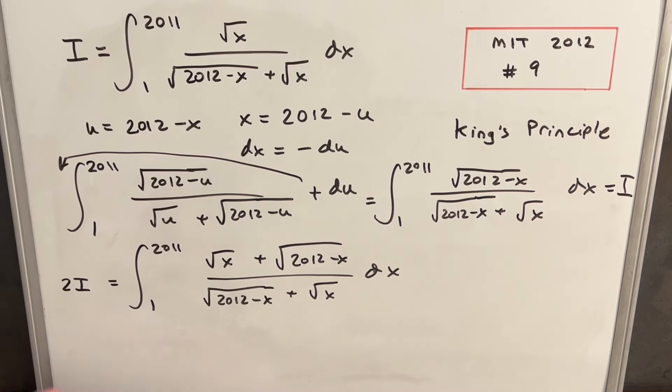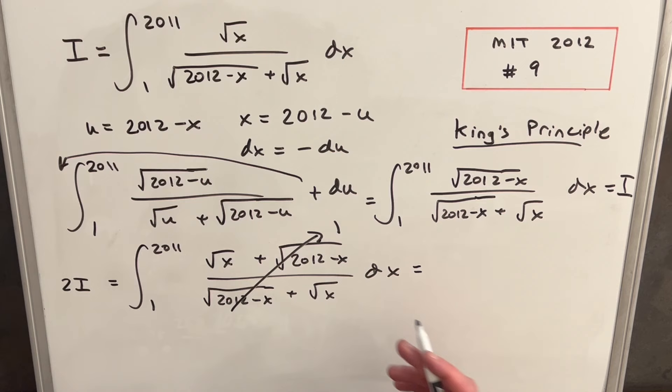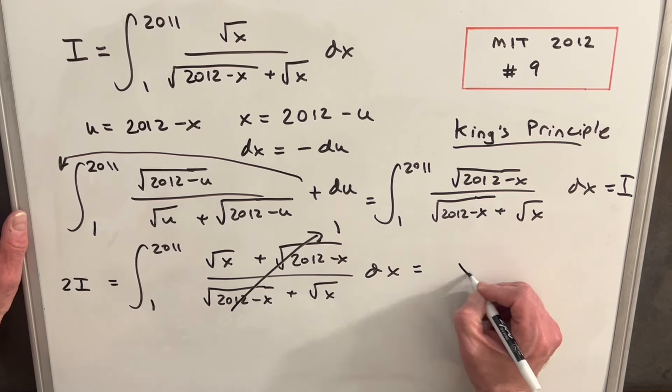And then we're set up perfectly because now we notice the order is reversed, but we've got the same thing in the numerator and the denominator. This will cancel and just give us a value of one. So then integrating one, super easy. That's why King's Principle is so nice, it simplifies down to one.